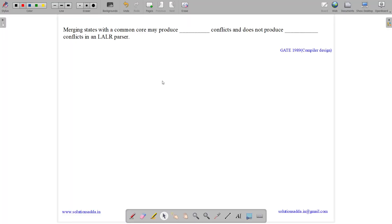This question belongs to compiler design subject and the topic is parsers. It was asked in GATE CSE 1989. The question is fill in the blanks: merging states with a common core may produce ___ conflicts and does not produce ___ conflicts in a LALR parser.